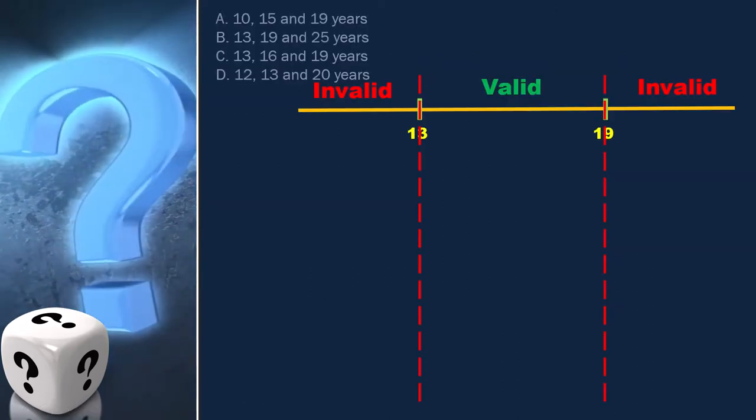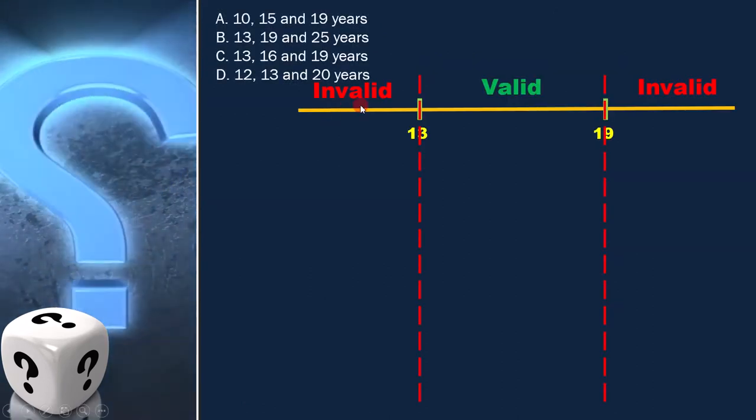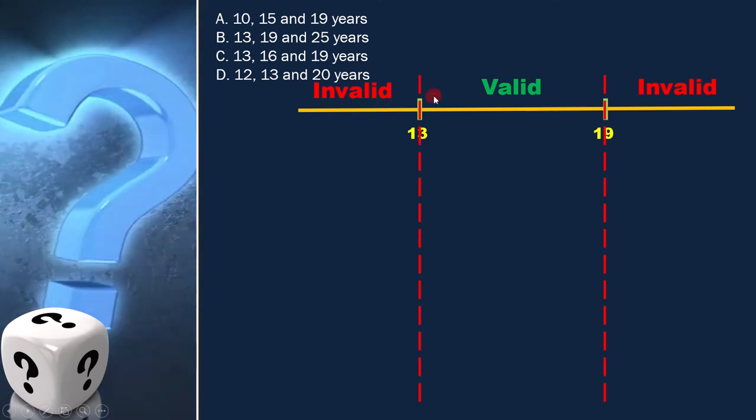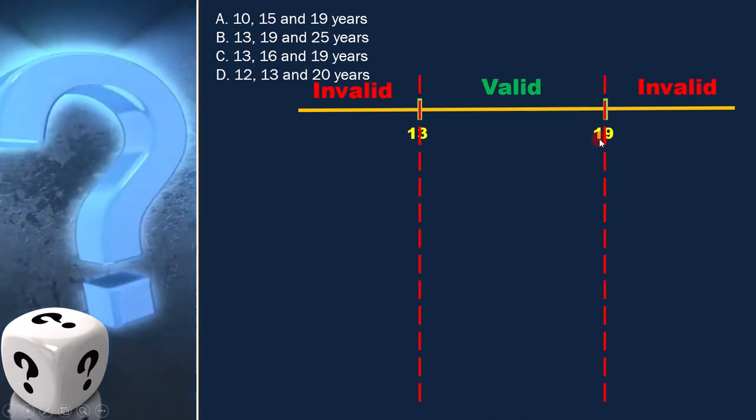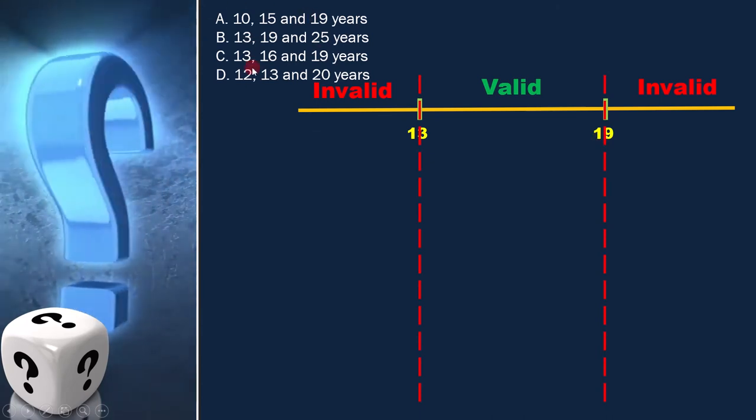Now we can draw the equivalence class diagram. With this definition, it's clear that 13 and 19 are the boundaries. Now let's analyze each of the options one by one.